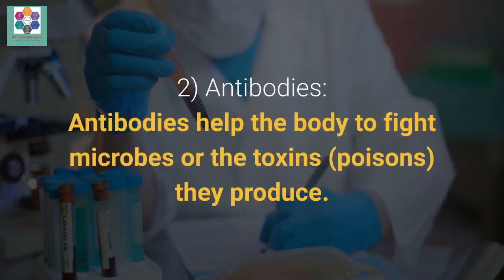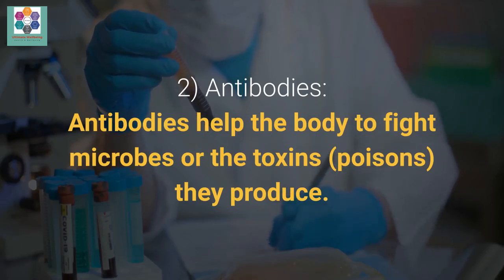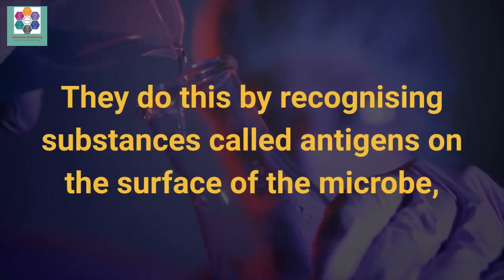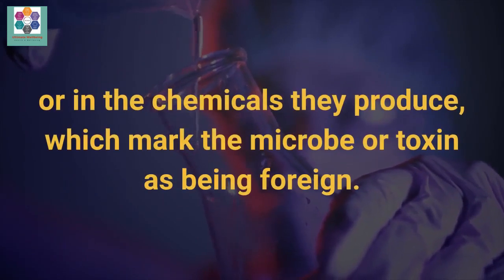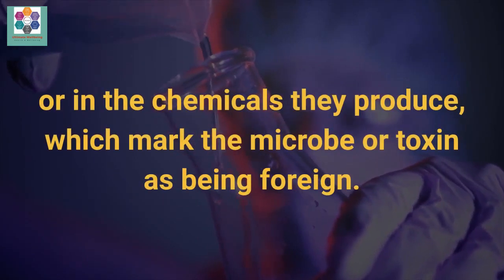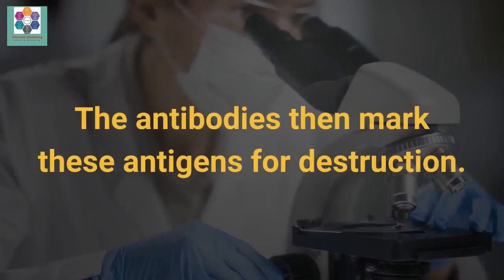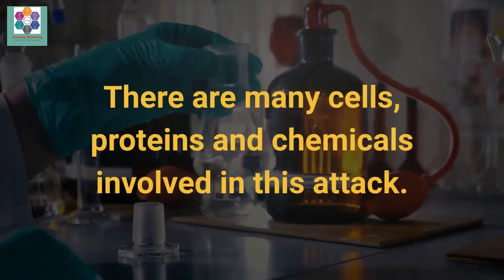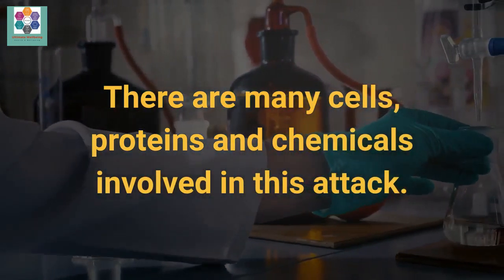2. Antibodies. Antibodies help the body to fight microbes or the toxins, poisons, they produce. They do this by recognizing substances called antigens on the surface of the microbe, or in the chemicals they produce, which mark the microbe or toxin as being foreign. The antibodies then mark these antigens for destruction. There are many cells, proteins and chemicals involved in this attack.